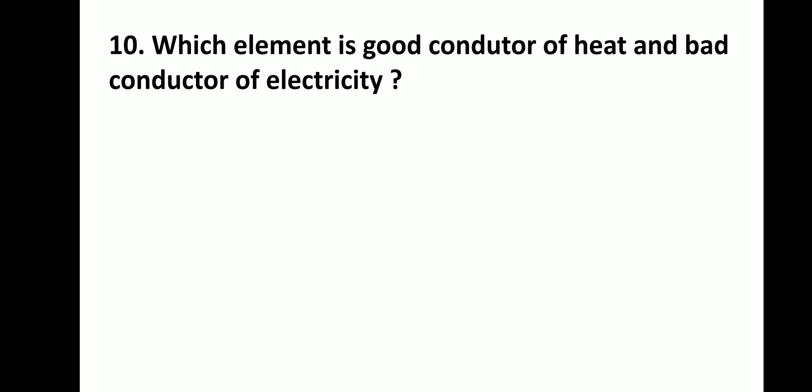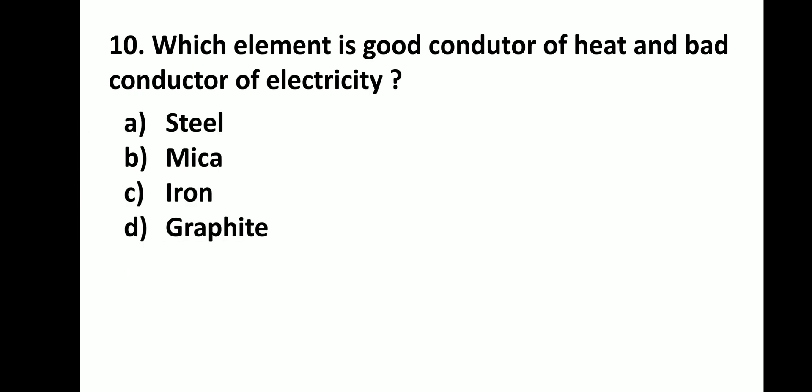Which element is a bad conductor of electricity but a good conductor of heat? Mica is a bad conductor of electricity. Graphite is a good conductor of electricity but a bad conductor of heat.